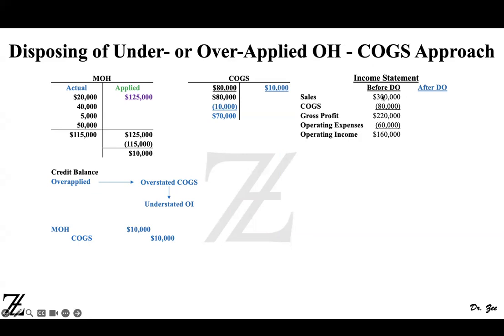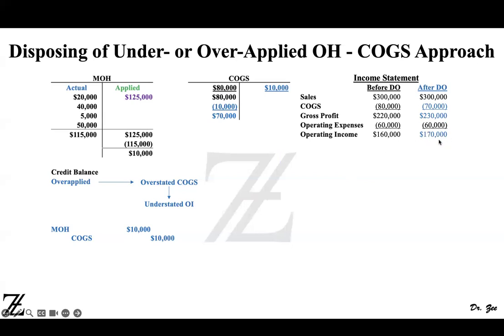The income statement before disposing off shows: sales $300,000, cost of goods sold $80,000, gross profit $220,000, operating expenses $60,000, operating income $160,000. After disposing off, sales remain the same. Cost of goods sold drops to $70,000 because it was initially overstated by $10,000. Gross profit increases to $230,000. Assuming operating expenses stay the same, operating income increases to $170,000 because it was understated before. Now the problem is fixed and it reflects the correct amount of operating income as well as cost of goods sold.